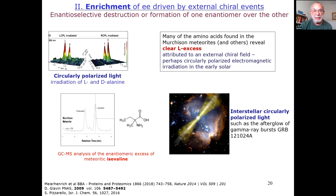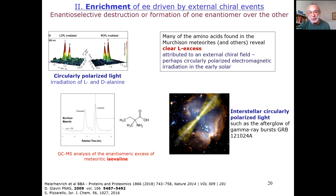Parameter two is that enantiomeric excess can be driven by external chiral events. Irradiation with circularly polarized light can cause a distinction between the two enantiomers of a racemic mixture, giving access to one over the other. This is important because many of the amino acids found in the Murchison meteorite and other meteorites reveal a clear L-excess, currently attributed to an external chiral field. A celebrated example is isovaline, and there are many interstellar circularly polarized light events, such as those detected after the blow of a gamma-ray burst.